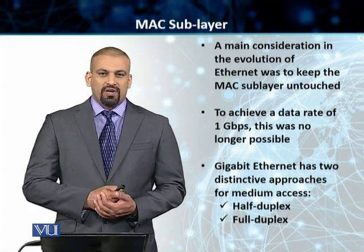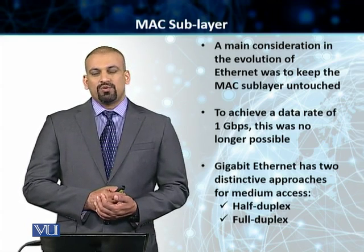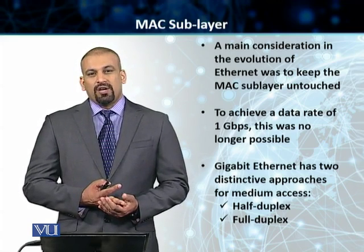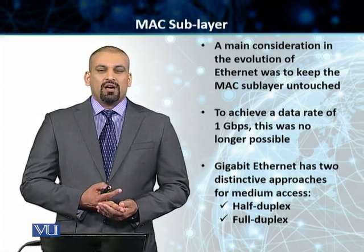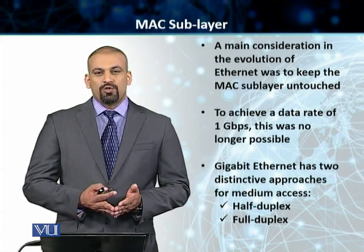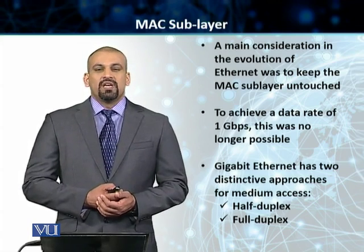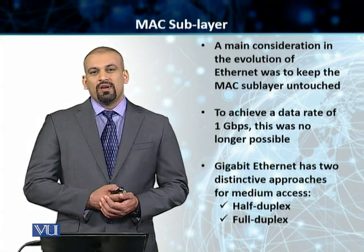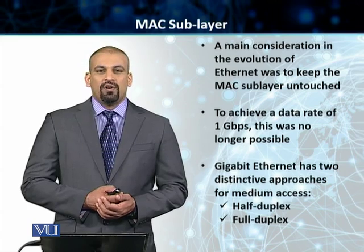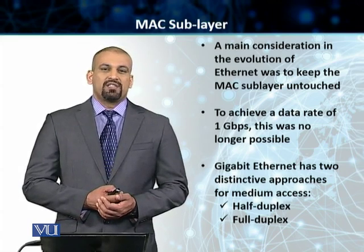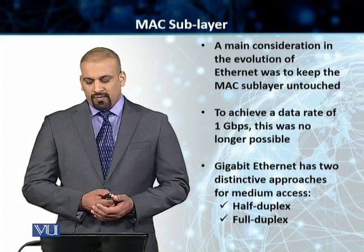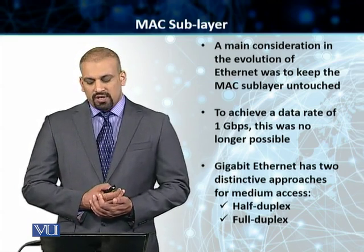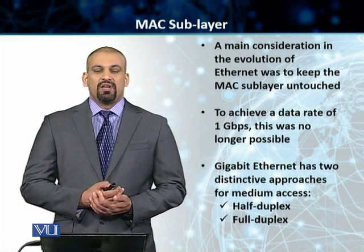The MAC sublayer was a bit of an issue when we moved to Gigabit Ethernet. One of the motivations was to not change the MAC sublayer. However, given the upgrade to 10 times the speed of what we had before, changes in the MAC sublayer were required. Gigabit Ethernet has two distinct approaches when it comes to medium access in the MAC sublayer: full duplex and half duplex.